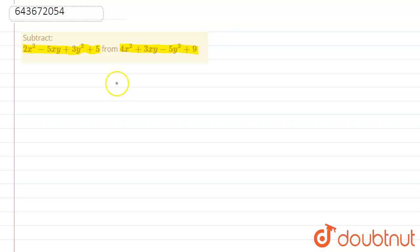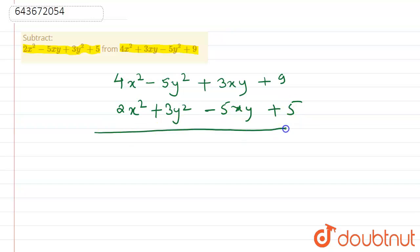So here 4x² minus 5y² we write in the sequence like this, plus 3xy plus 9. Here 2x² minus, now plus 3y² minus 5xy plus 5. Now we have to subtract these terms.